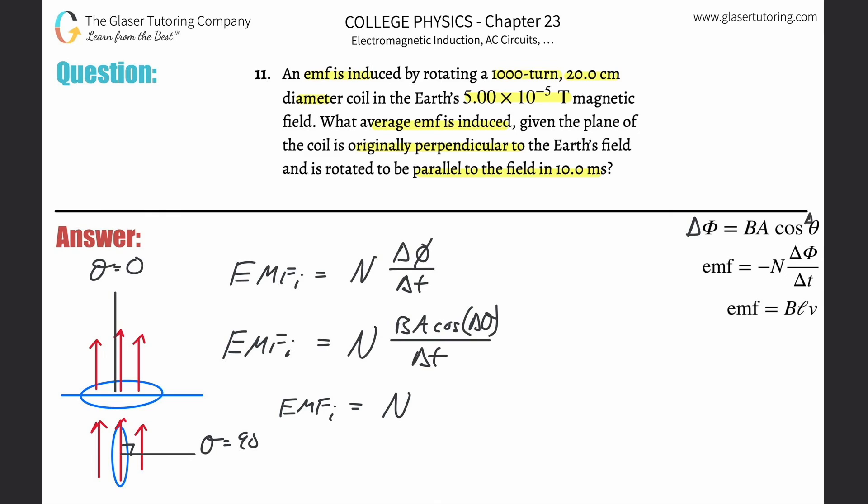EMF is going to be N times now. So BA cosine of theta, we can call it final minus then BA cosine of theta initial or something. Don't worry about the sines here.